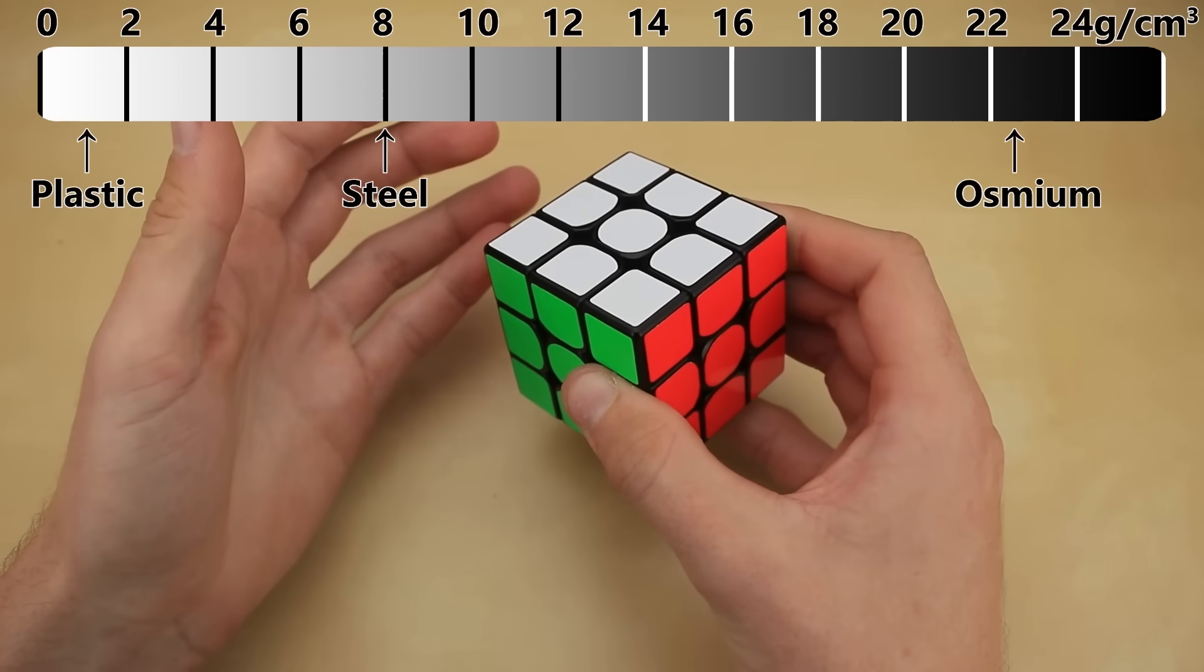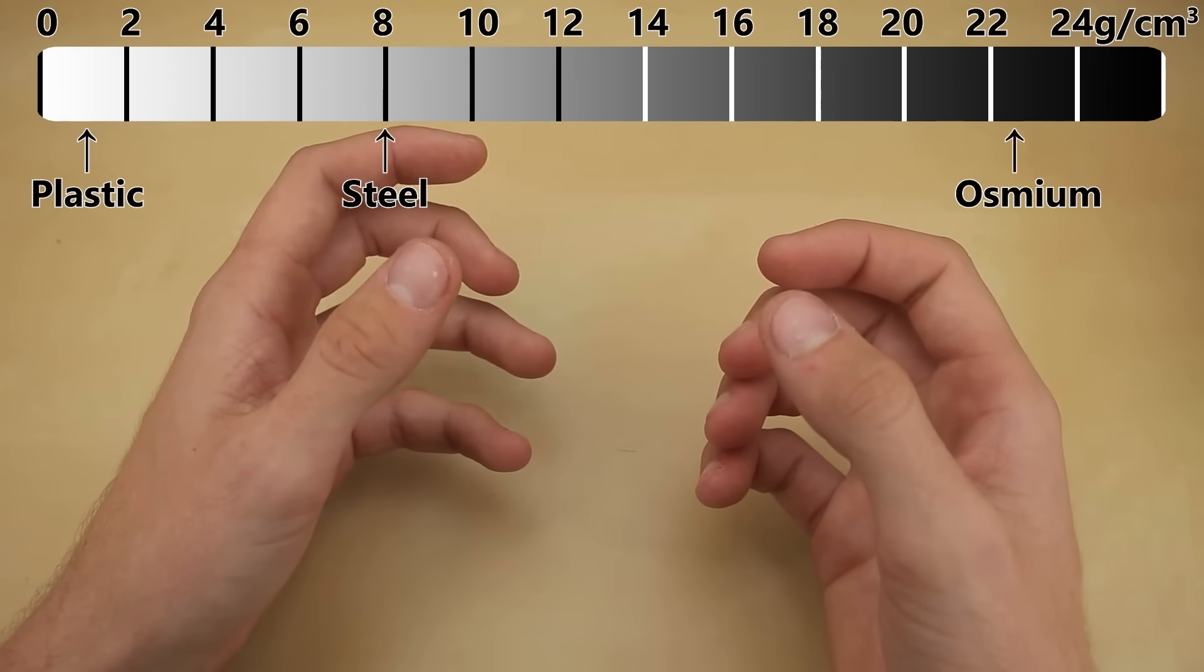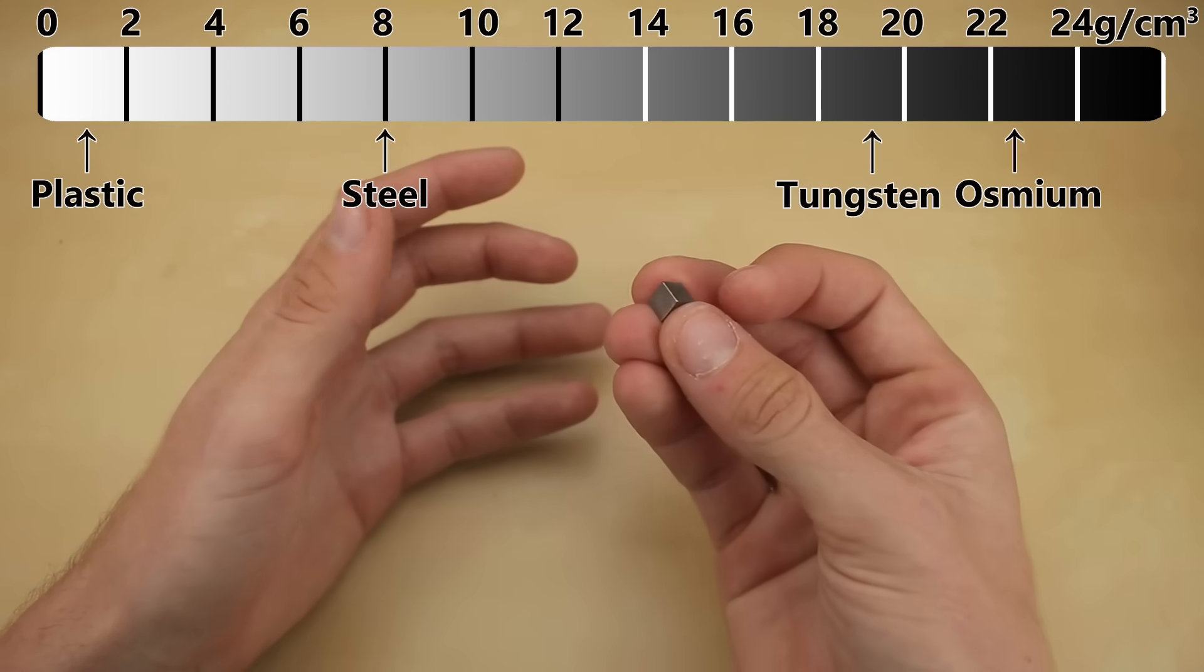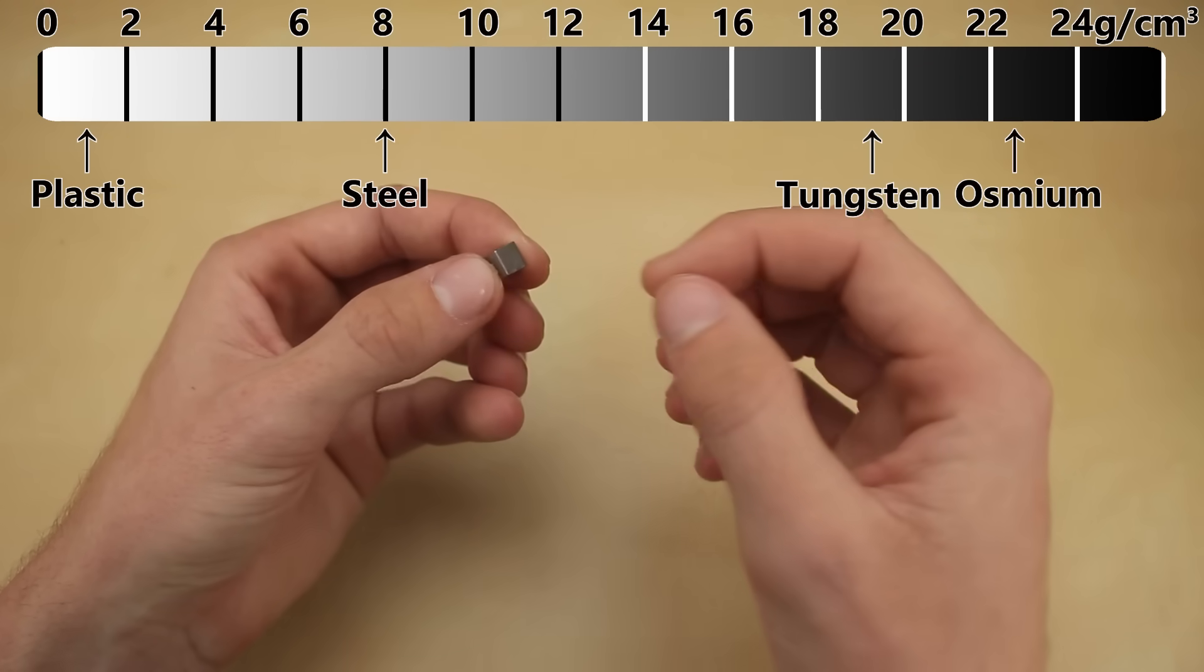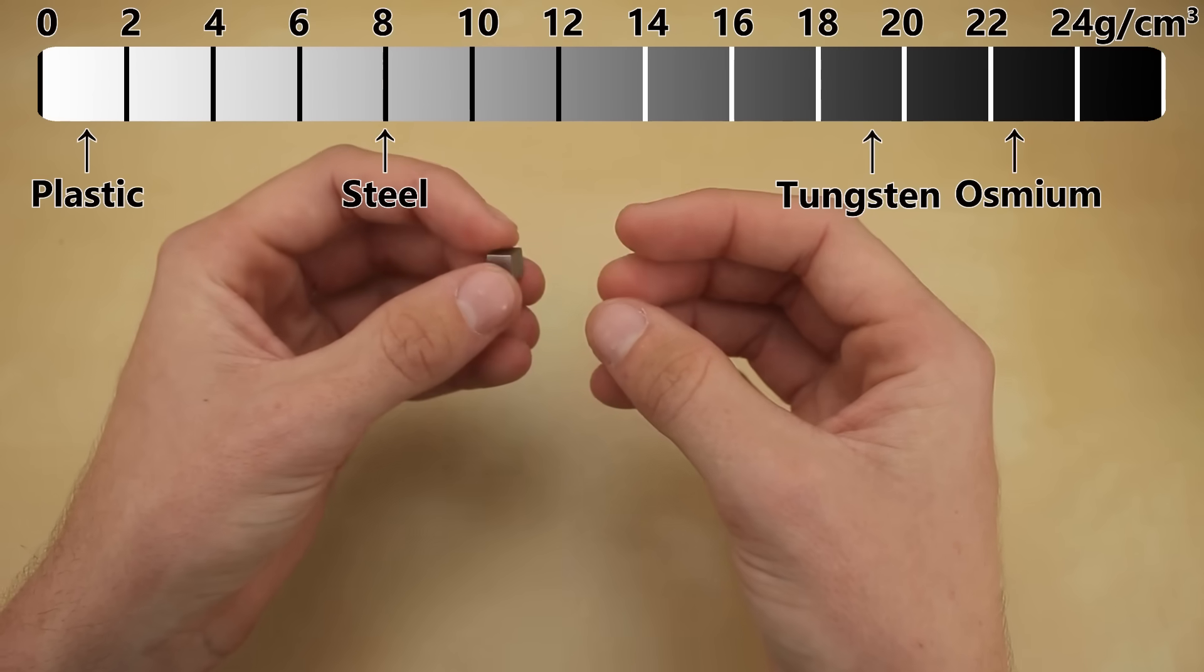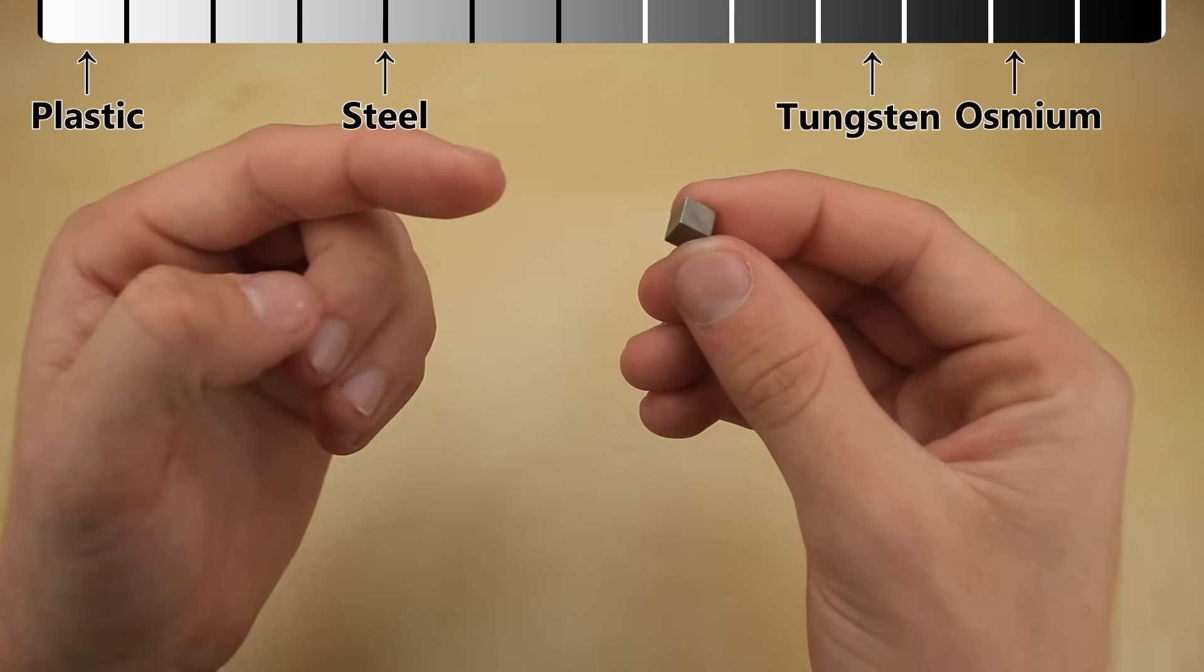But first, we're going to need a denser metal. Luckily, there is a metal that's a lot cheaper than osmium, but still has an extremely high density of over 19 grams per cubic centimeter. And that metal is tungsten. A solid tungsten Rubik's Cube would still weigh over 3,500 grams, but unfortunately, being a very hard metal and having a melting point of over 6,000 degrees, it would be very hard to shape Rubik's Cube pieces out of pure tungsten.